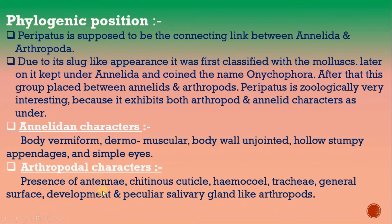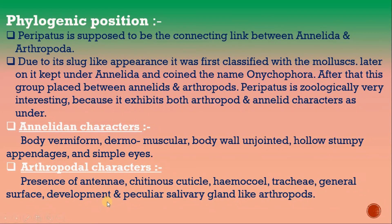Arthropodan characters of Peripatus include: the presence of antennae, a chitinous cuticle, haemocoel, a tracheal system, and peculiar metamorphosis during development — all characters of Arthropoda.